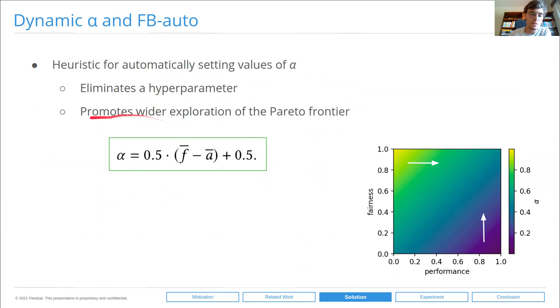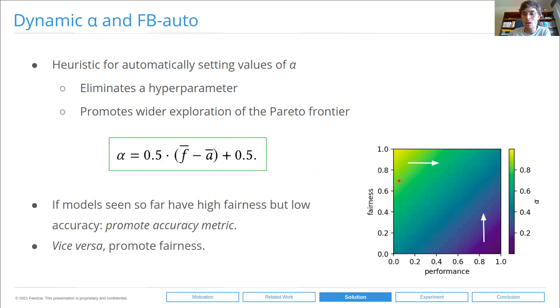And this is the heuristic for setting the alpha values. Further details can be found in the paper. But essentially what we're doing is, when the models seen so far show very high fairness but low performance, low accuracy, we use a higher alpha to promote accuracy. When the models have high performance but low fairness, we use a lower alpha to promote fairness.